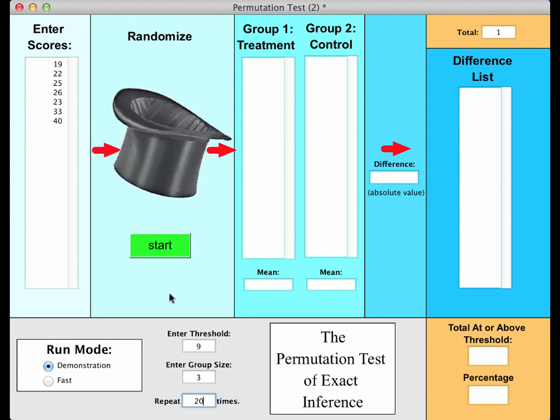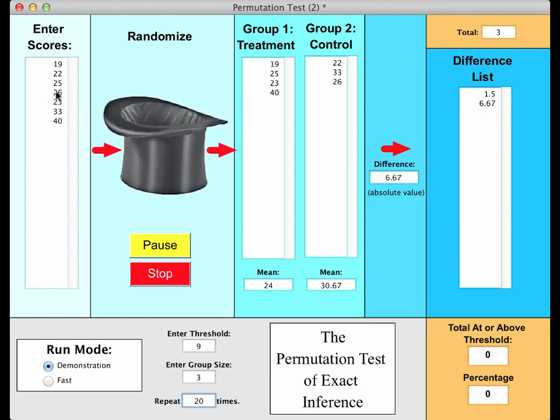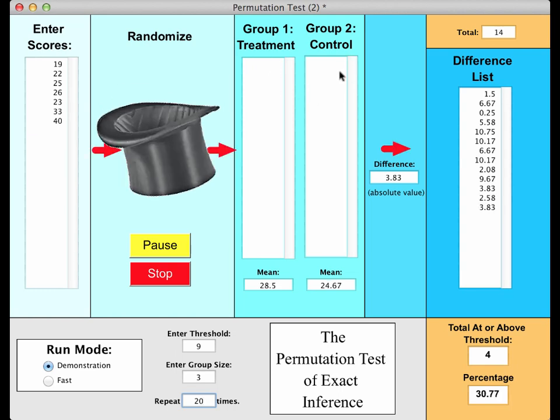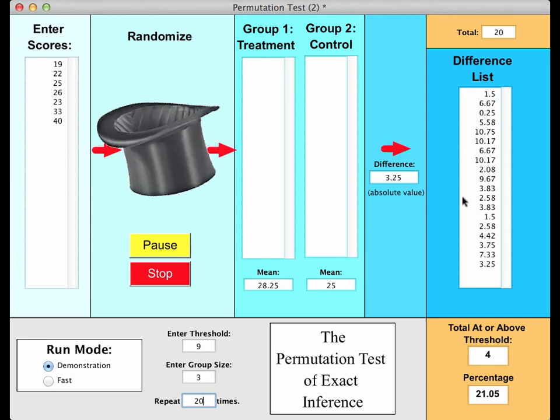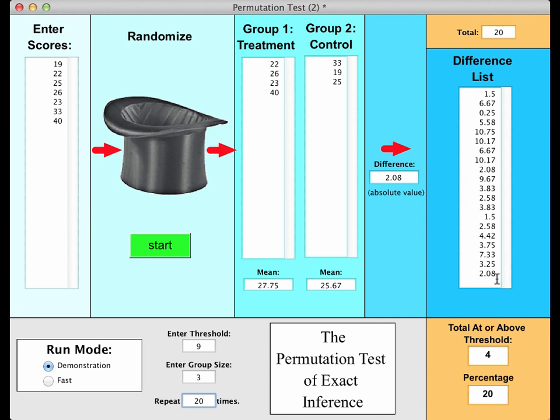I built this little app to explore these ideas and also to have a way to demonstrate these ideas to others. Let me go ahead and begin. Here's the main screen, very colorful. Let's just begin by seeing how this works. We start by entering the scores. Now we need to enter the threshold, and we know all about that from the earlier part of this video. Now a group size - we can enter either three or four. Three is better for computation. And how many times do I want to repeat this whole process? How about if I put in 20? Now I'm going to run this in demonstration mode. Let's see what that top hat is all about. Let's start.